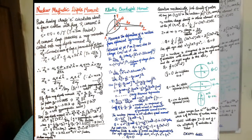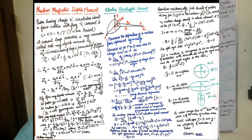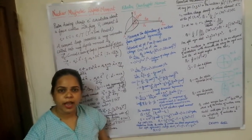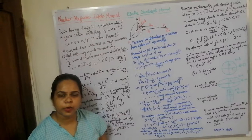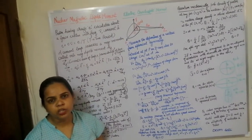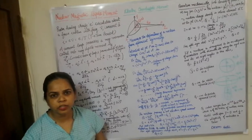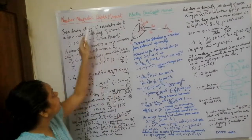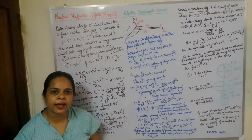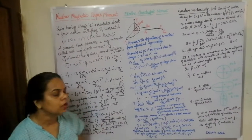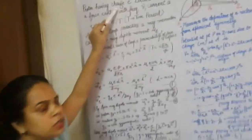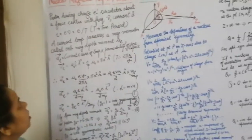the orbital motion produces the orbital angular momentum and the spin motion produces the spin angular momentum. Both result in a magnetic field, and due to the production of this magnetic field there would be a magnetic dipole moment inside the nucleus, which is called the nuclear magnetic dipole moment.